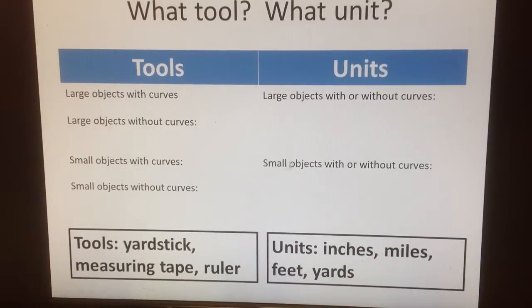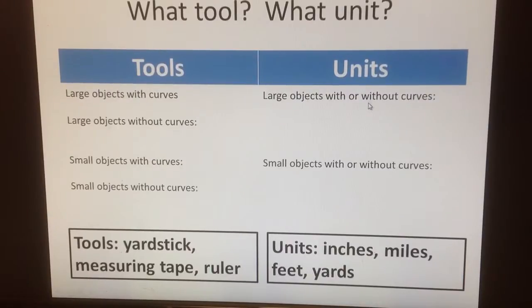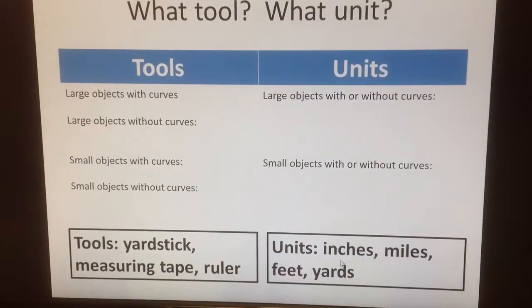Then we talked about units — things like inches, miles, feet, yards. What would be the best unit to measure large objects with or without curves? The curves don't matter when we have units. We thought for large objects, yards, miles, or feet would be best. For small objects with or without curves, probably inches would be best — otherwise it would just be too big for what we're measuring.